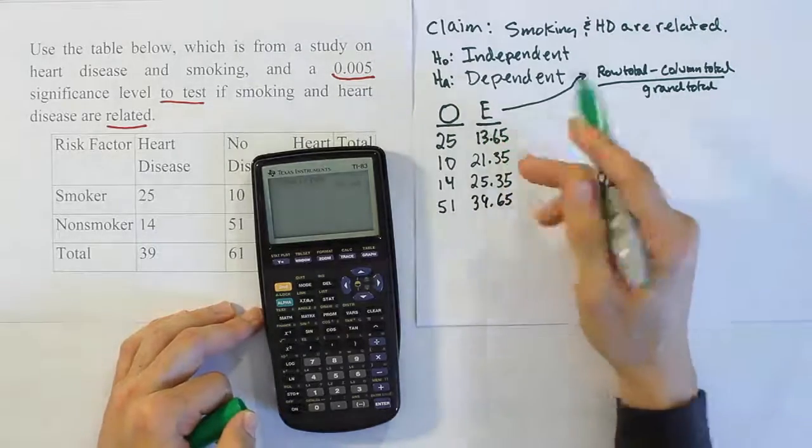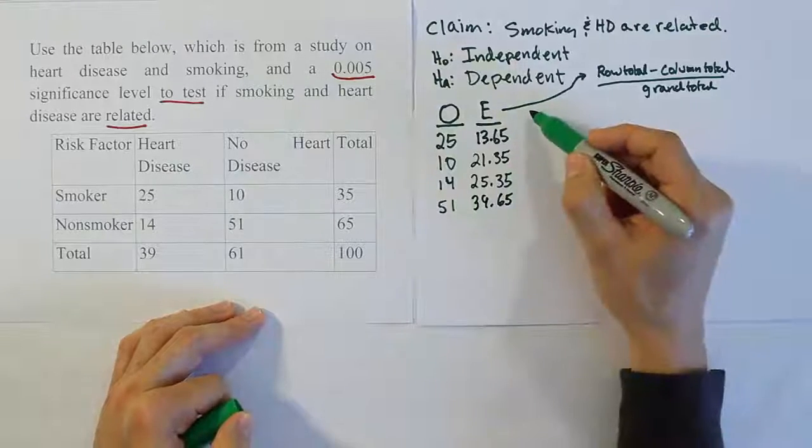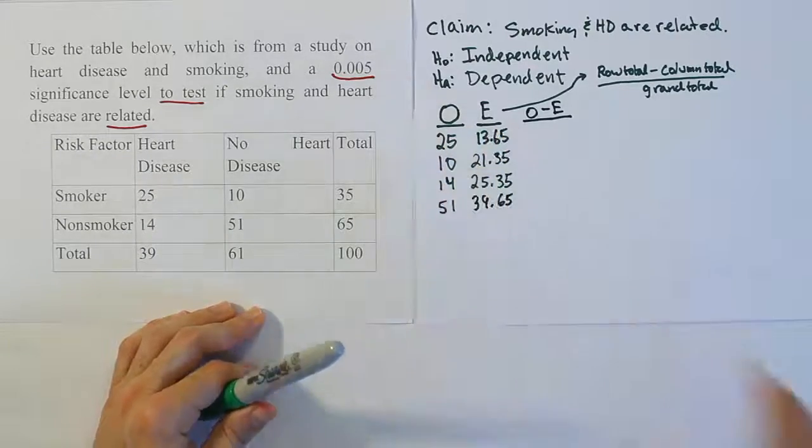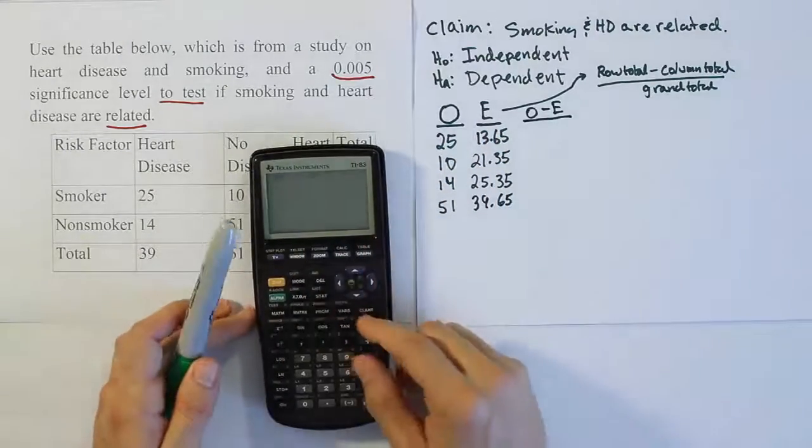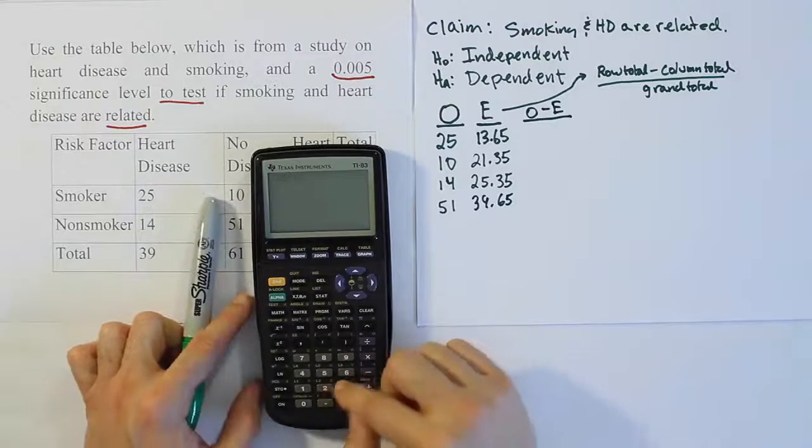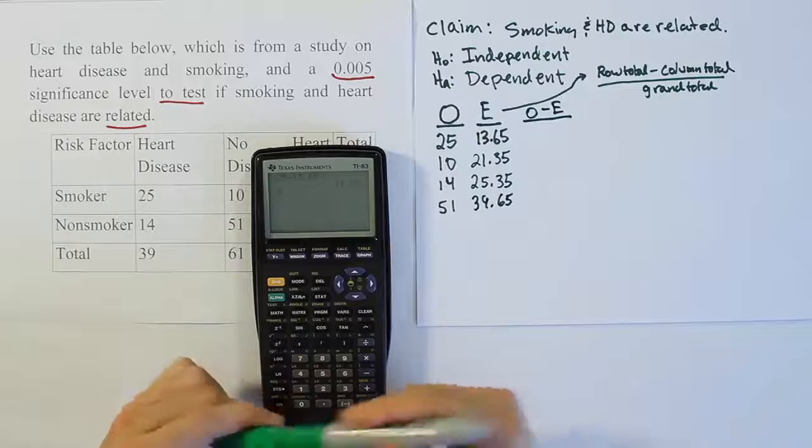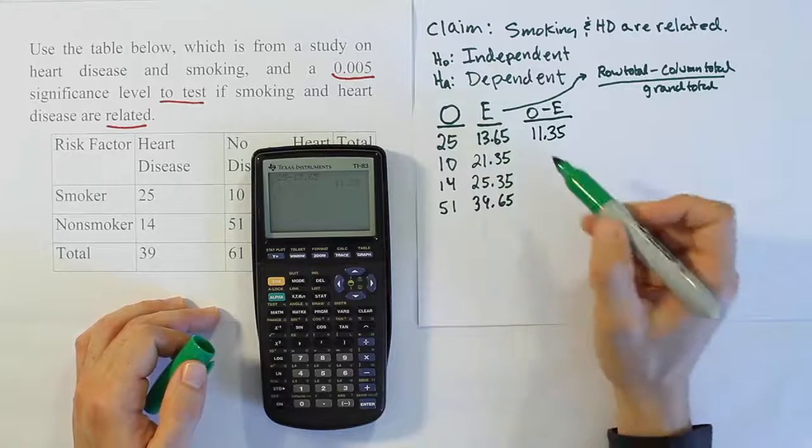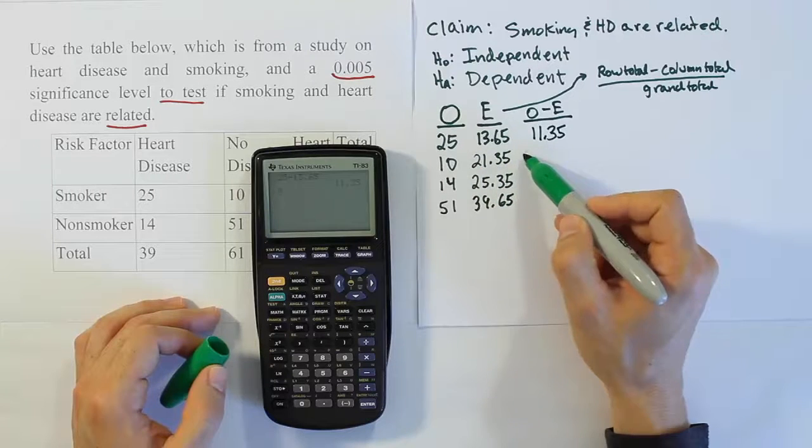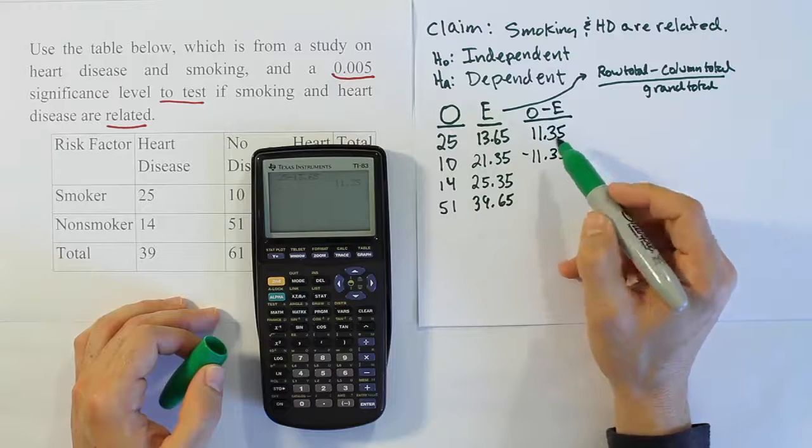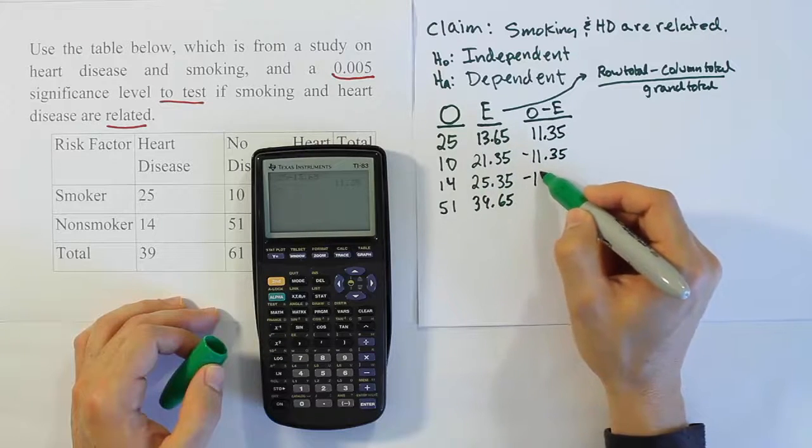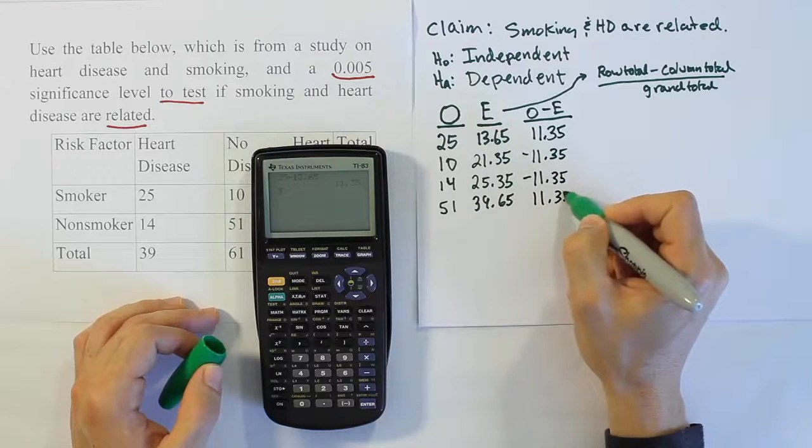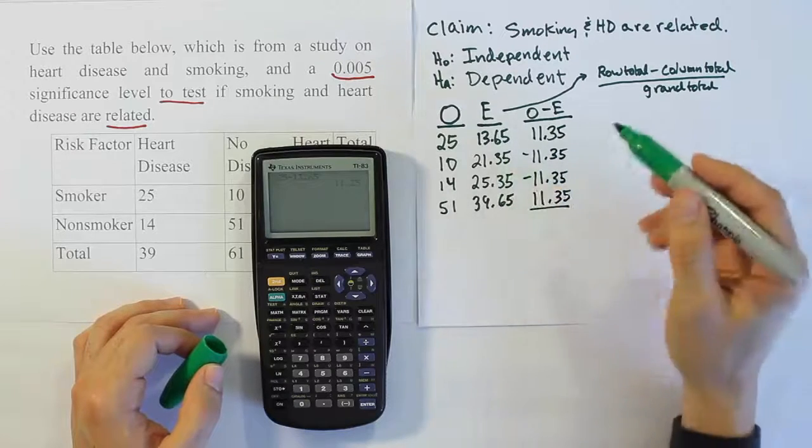That's observed and expected. Our next part of the process is to do observed minus expected. We'll just subtract these two and get that difference. In this scenario, the difference will be common throughout the table. Once I get that difference of 11.35, I know that all the others will have that same difference. It's just sometimes it'll be negative. Like 10 minus 21 is negative 11.35, 14 minus 25 is negative 11.35, and 51 minus 39 is positive 11.35. It has to sum to zero for this scenario.